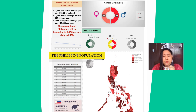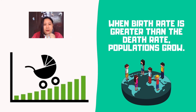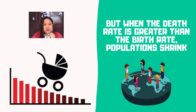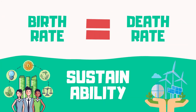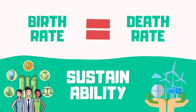Remember that our resources can only sustain a specific number of individuals. If our population continuously grows at a rapid pace, more Filipinos will experience scarcity and even inequality. When birth rate is greater than the death rate, populations grow. But when death rate is greater than the birth rate, the population will shrink. Therefore, we need to have the same or nearly equal birth rate and death rate to achieve sustainability.